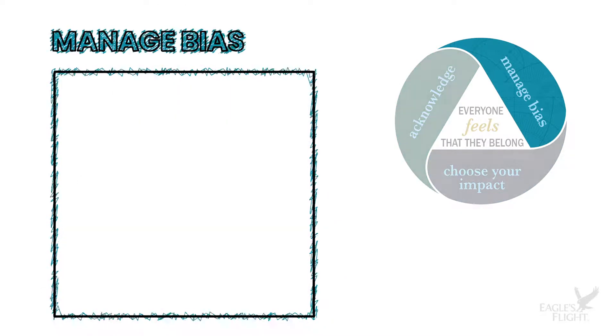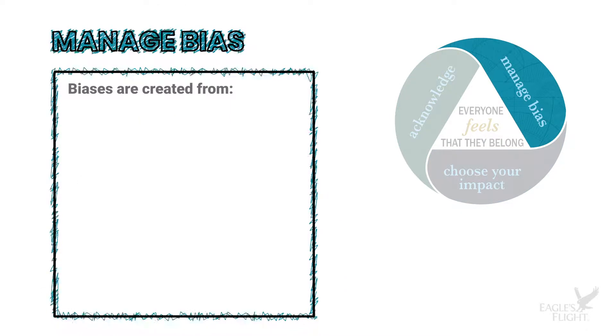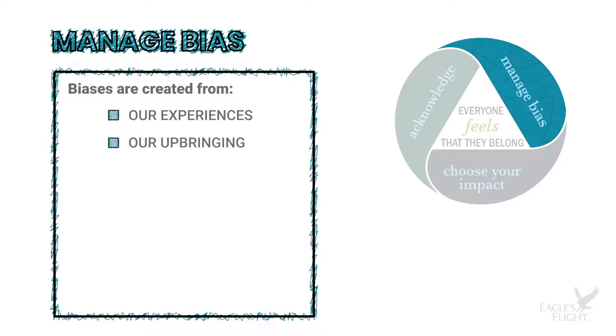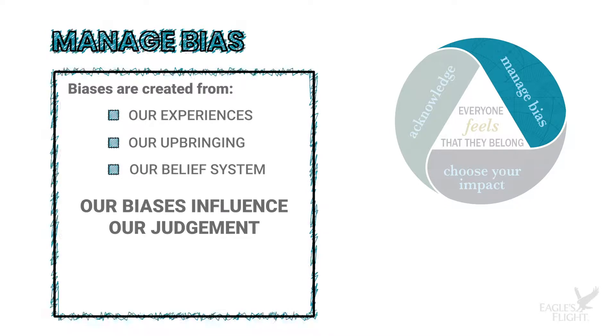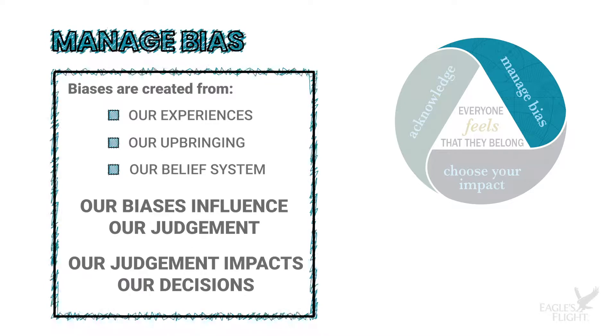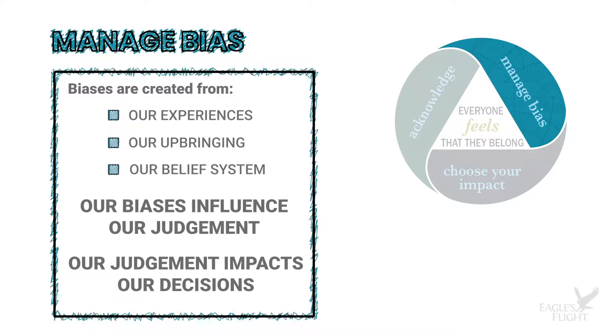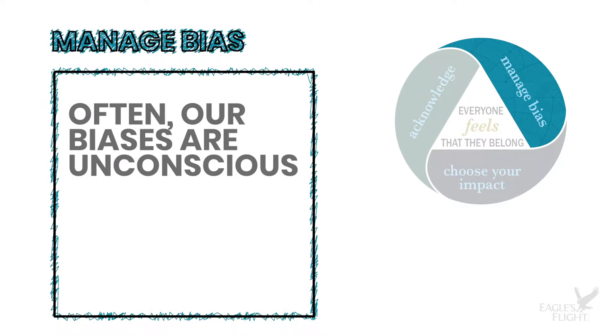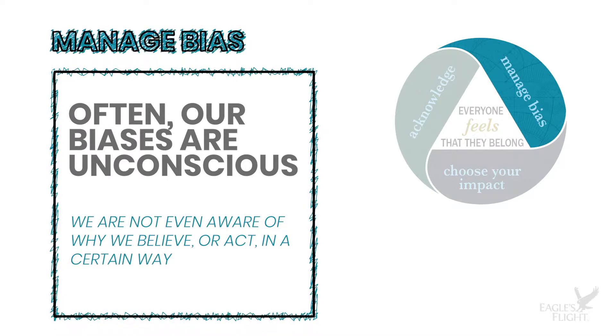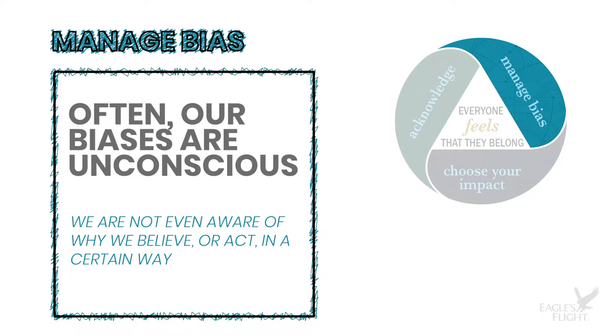The second part of our model is called manage bias. Biases are created from our experiences, our upbringing, our belief systems. But ultimately, our biases influence our judgment, and our judgment impacts the decisions that we make. And the scary thing is that often our biases are unconscious to us. We're not even aware of why we believe or why we act in a certain way.